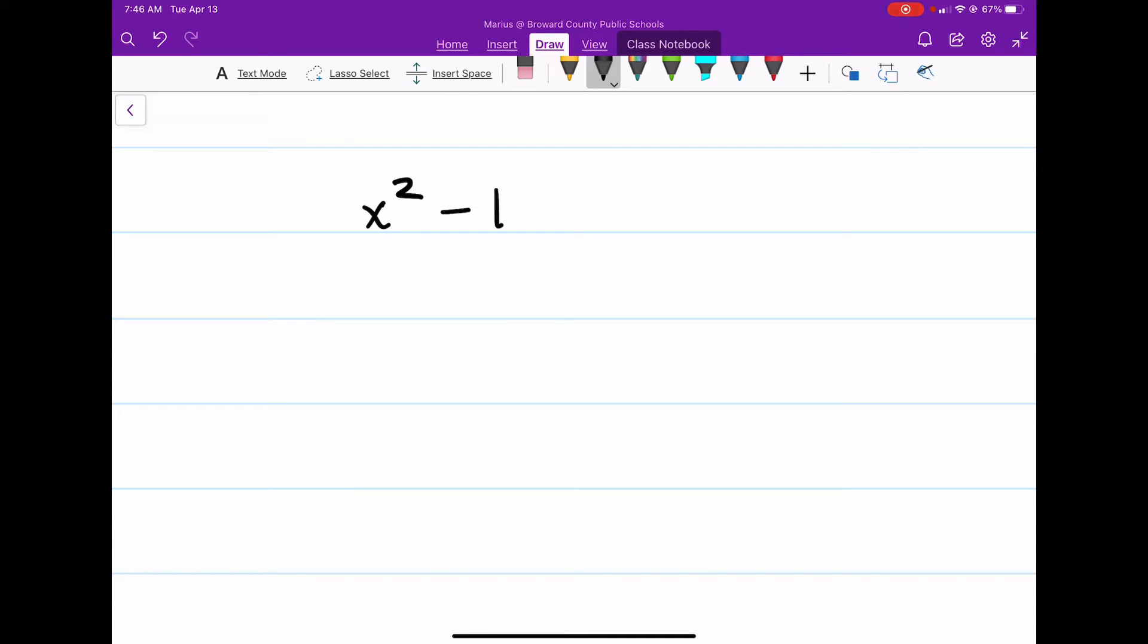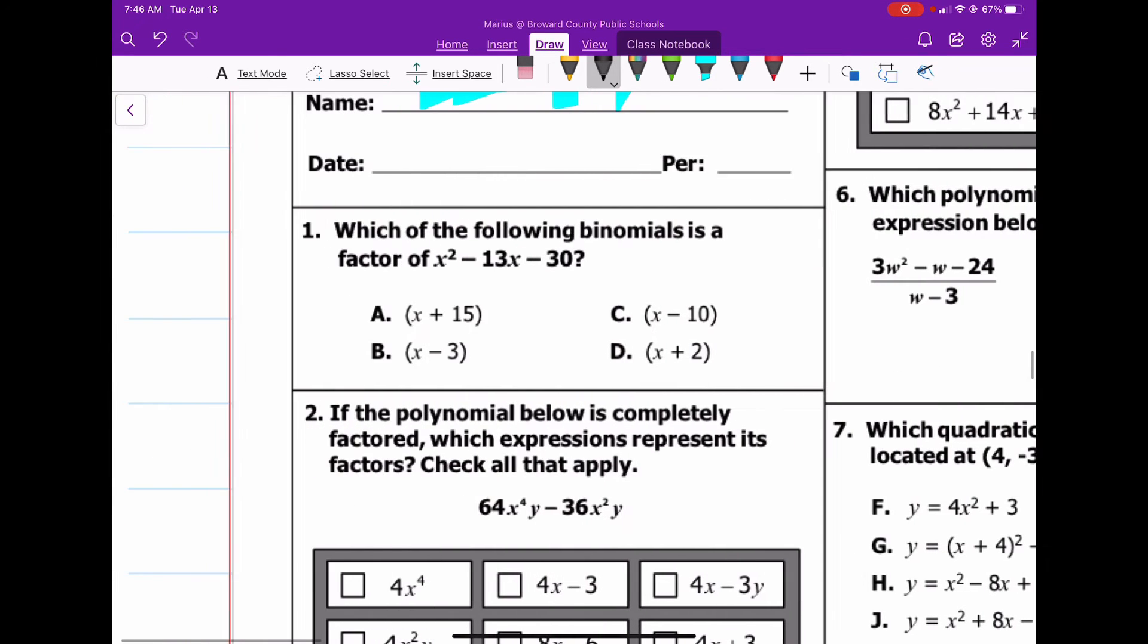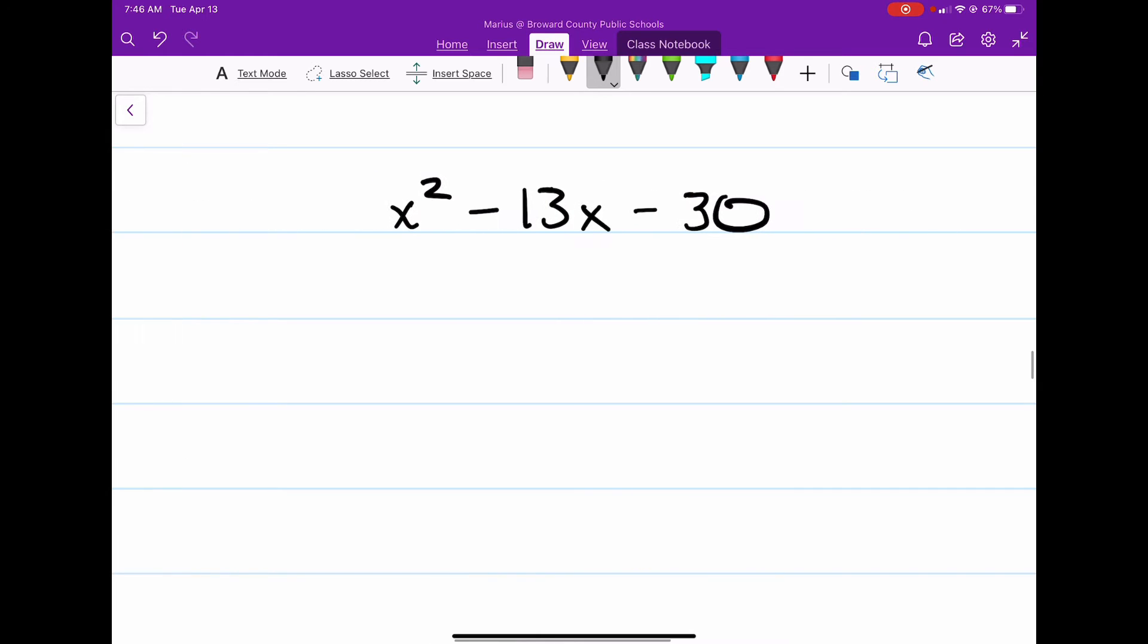So, x squared minus 13x minus 30. I'm just going to double back. Alright. So, first what we want to do is label our quadratic with a, b, and c.